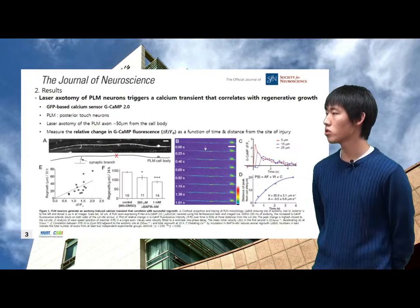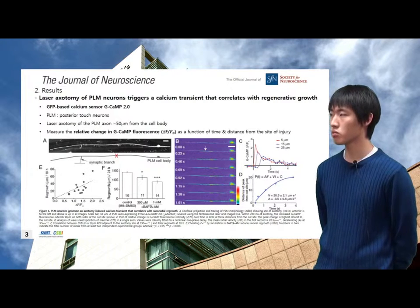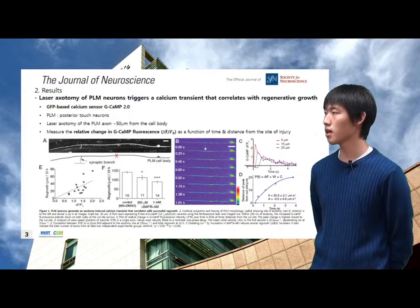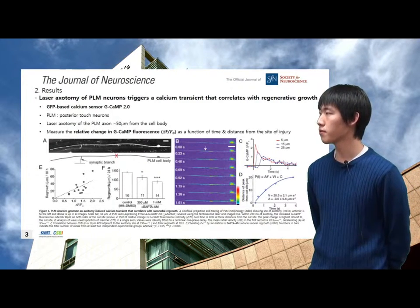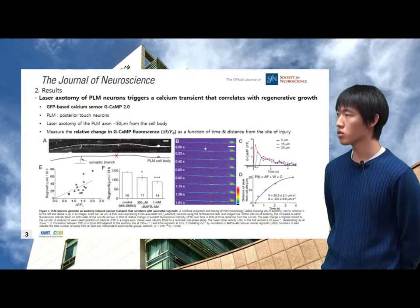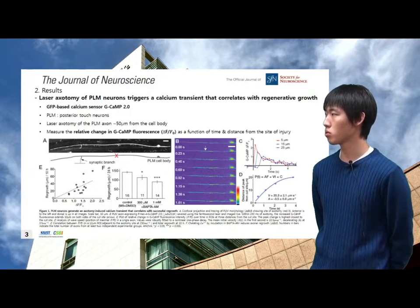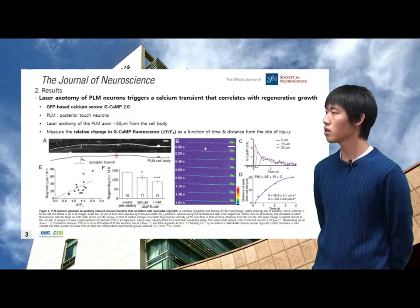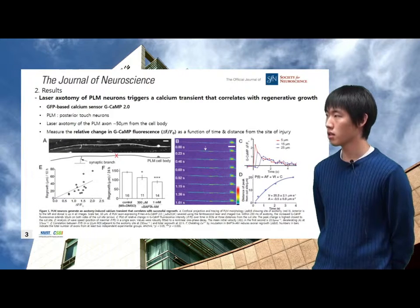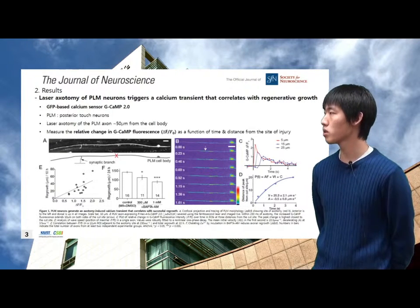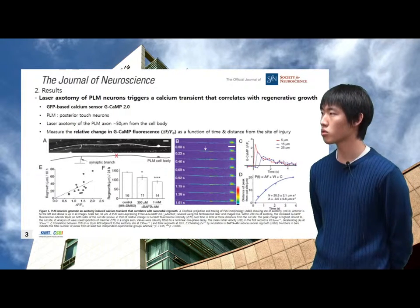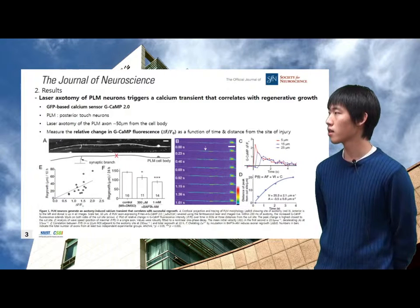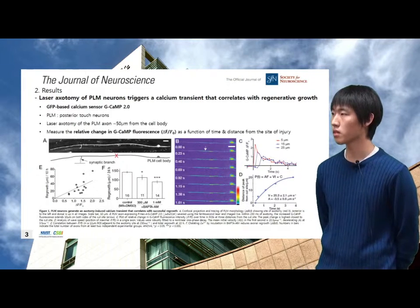First, they measured the relative change of calcium using the GFP-based calcium sensor GCaMP2.0 as a function of time and distance from the site of laser axotomy. The amplitude and velocity of the GCaMP transient decayed away from the cut site. They concluded that laser axotomy in vivo triggers an axonal calcium transient that can propagate along much of the cell.